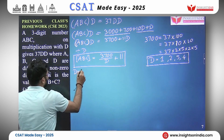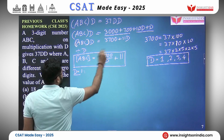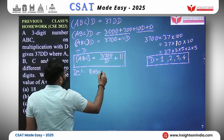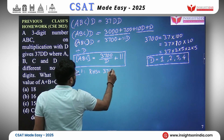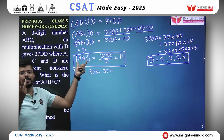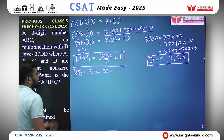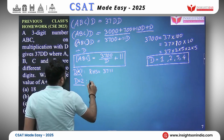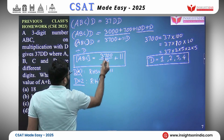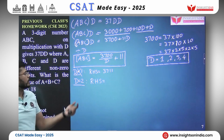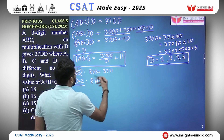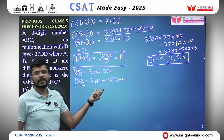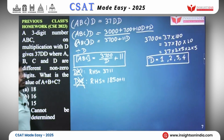Trying D equals 1: RHS is 3700 plus 11 equals 3711 — that is a four-digit number, but LHS ABC is only three digits, so this does not work. Trying D equals 2: 3700 divided by 2 is 1850, plus 11 is 1861 — again a four-digit number, so this also does not work.